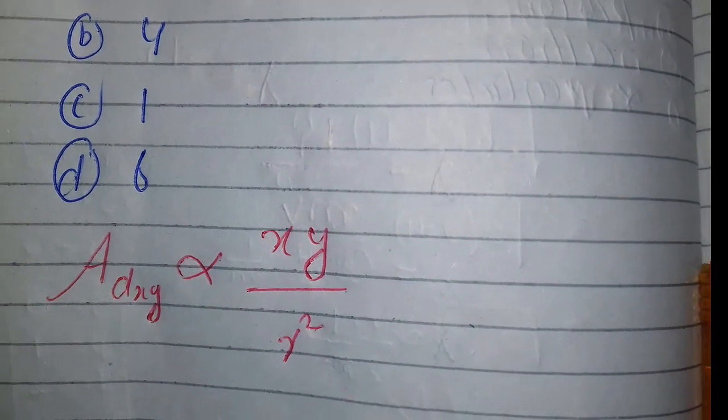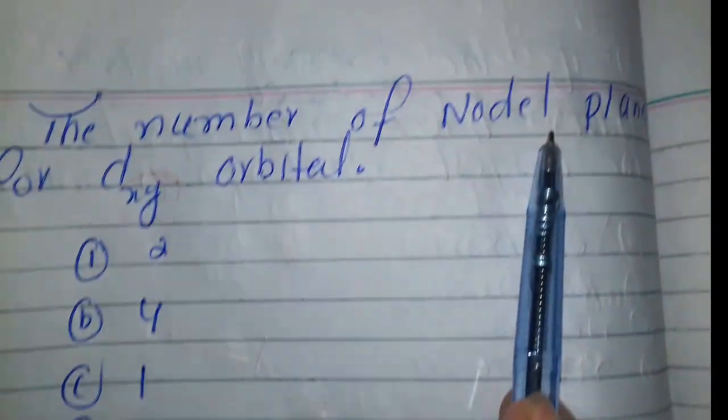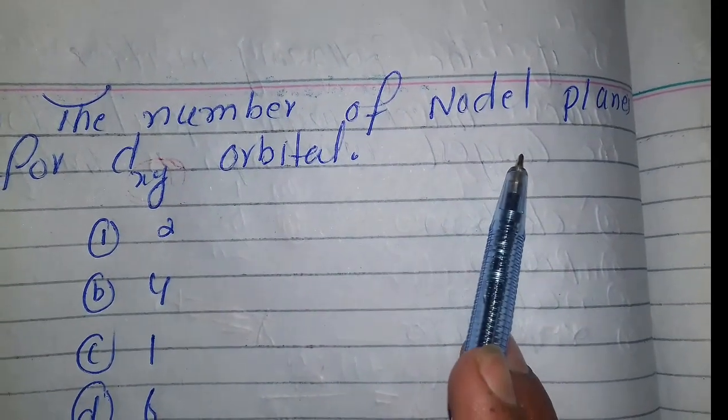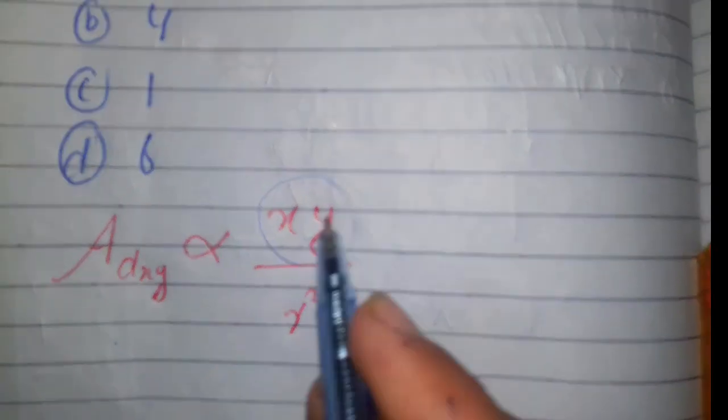Now the nodal planes are those areas where the electron density is zero, so XY equals zero.